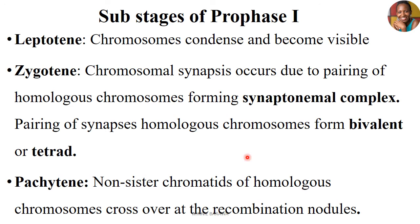In sub-stage one, which we call Leptotene, this is the stage where chromosomes focus on condensing and becoming visible. This stage is all about condensation and visibility of the chromosomes.